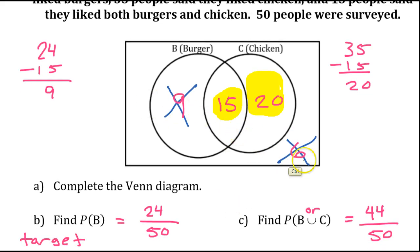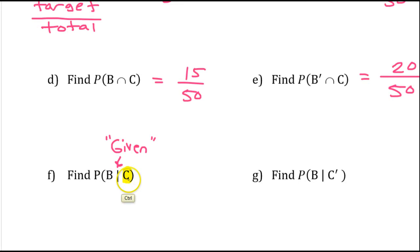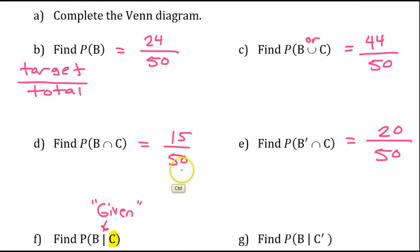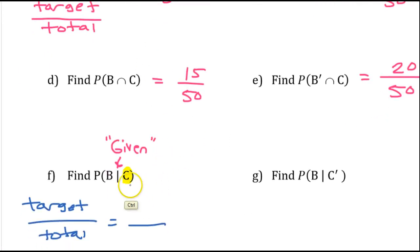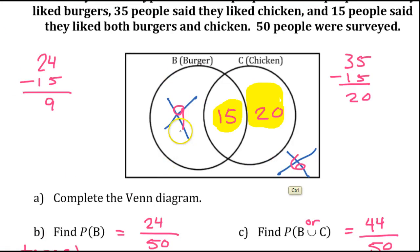Highlight the given and cross out everything else. Now, we will do target over total for probability. Let's start with the total. We have a new total. Until now, the total was always 50, because there were 50 people that were in this survey. But, we've now crossed out some things. So, there's going to be a new total based on what's left over. This is going to be 35.